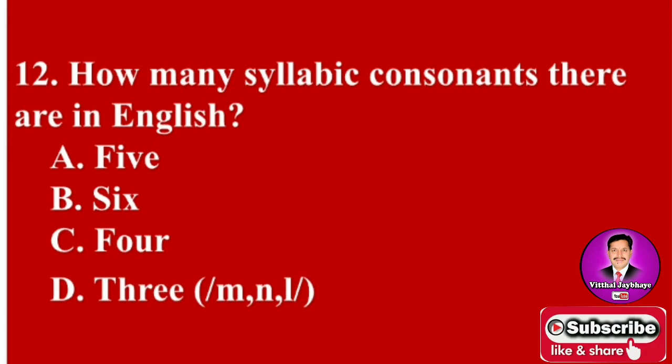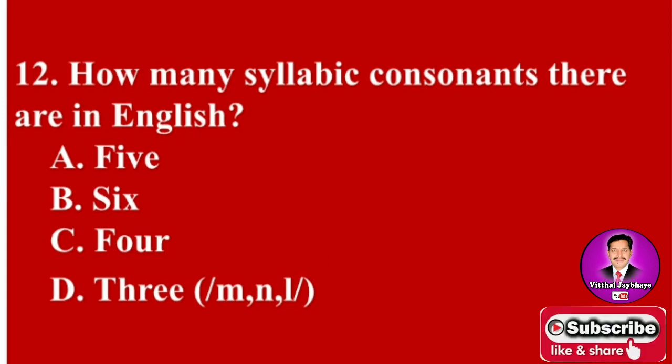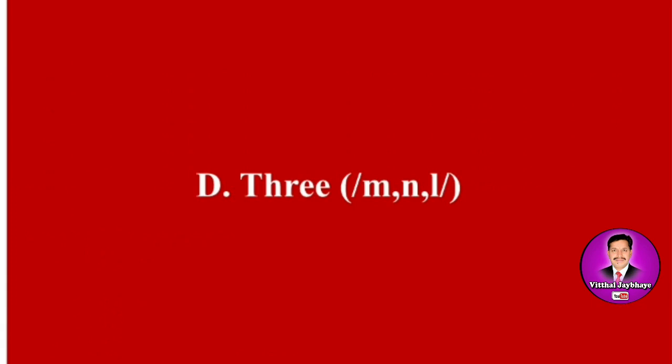Next MCQ: How many syllabic consonants are there in English? Options are A: 5, B: 6, C: 4, D: 3. The syllabic consonants are M, N, and L. The correct answer is D — there are three syllabic consonants: M, N, and L.